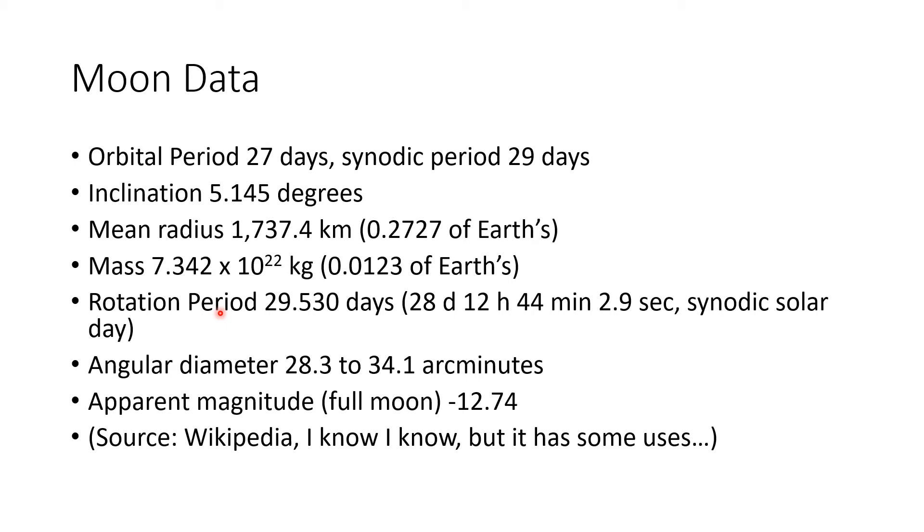The rotation period is 29.53 days, actually 29 days, 12 hours, 44 minutes, 2.9 seconds. This is the synodic solar day. It takes 29 and a half-ish days to rotate. The orbital period and the rotation period are basically the same. That is why we only see one face toward us at all times.